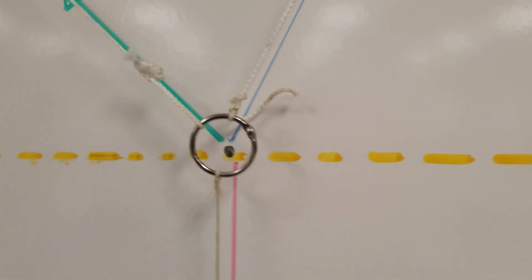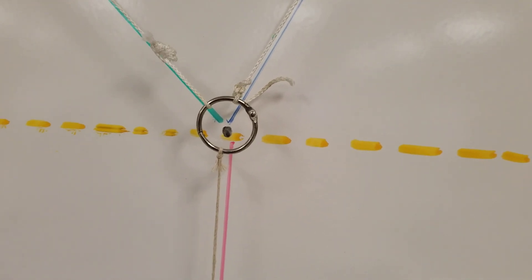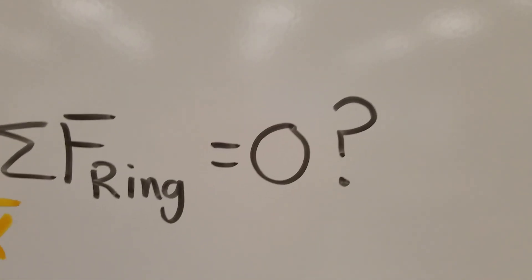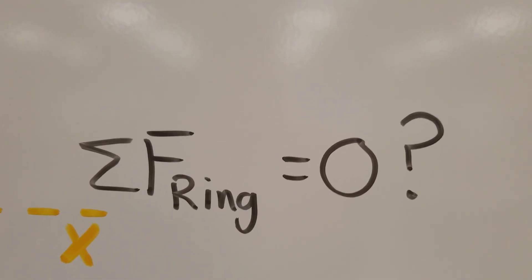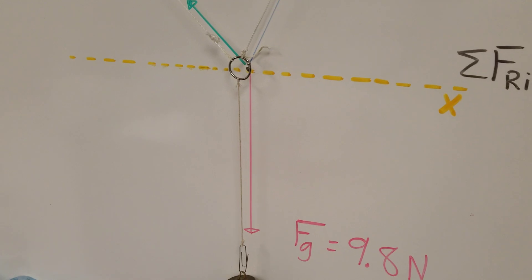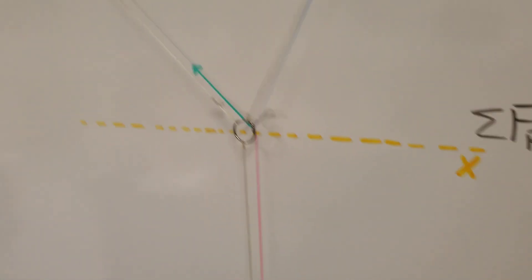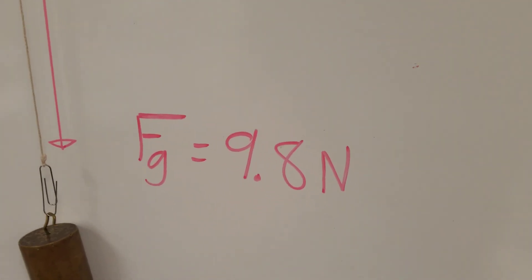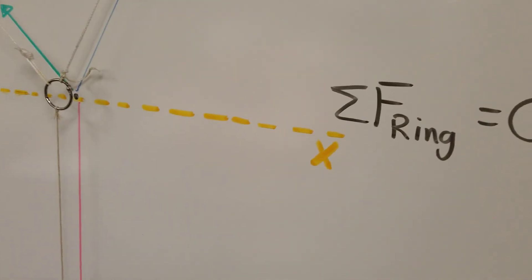Now because the ring is in equilibrium, like it ain't going anywhere, the net force on that ring should be equal to zero. So when I add up these three forces—one is green, one is blue, one is red—they should add up to zero. Well the first thing you go is, well 4.5 plus 7.3 plus 9.8 does not equal zero. What's up with that?